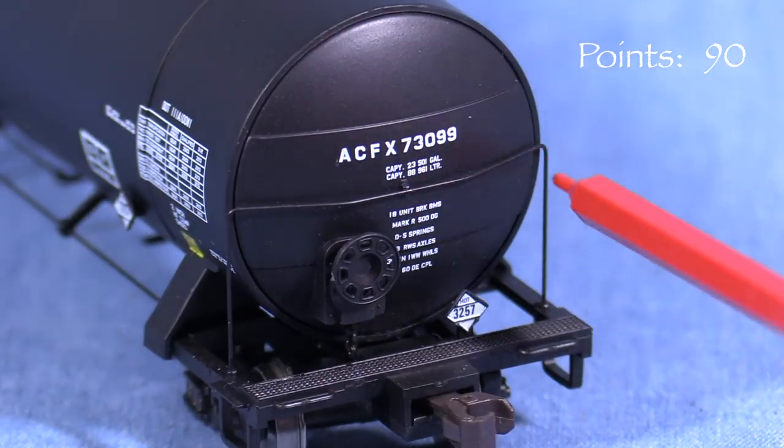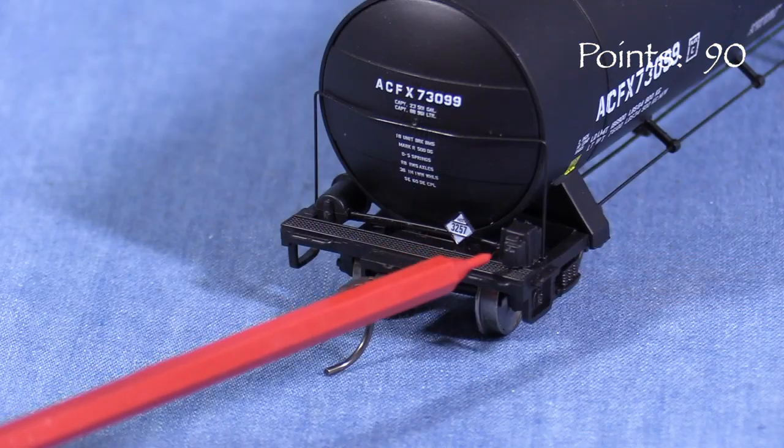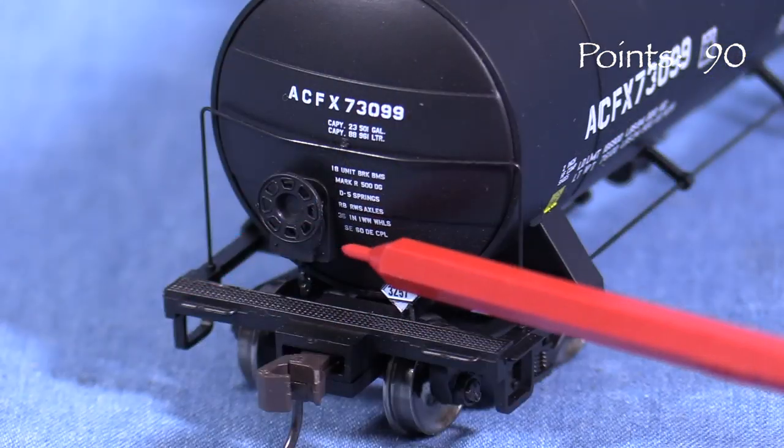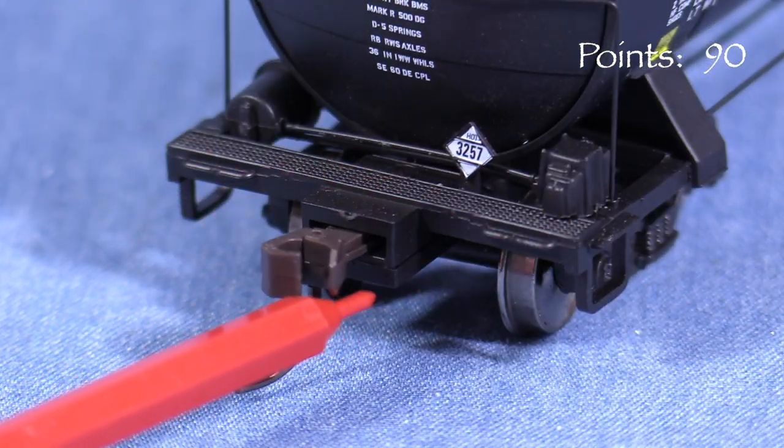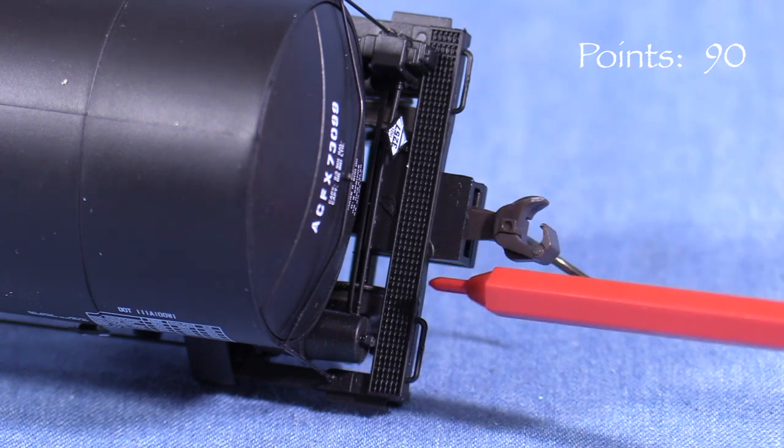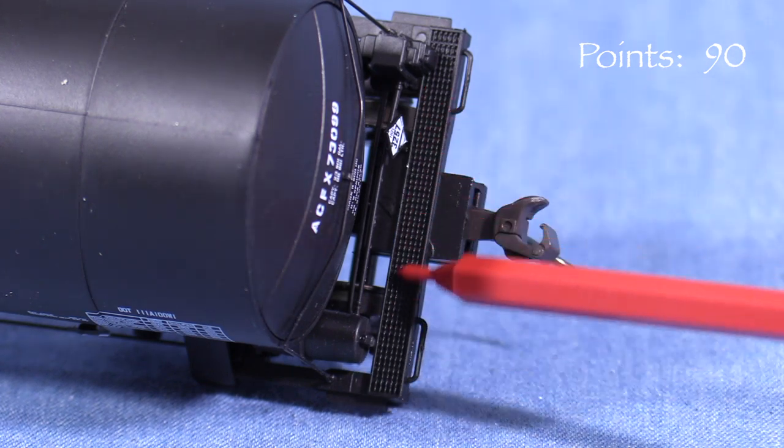Both ends of the car have freestanding end railings, hazmat placards, and end grabs. The A end has a brake reservoir and triple valve. The B end has a brake wheel. Neither end has uncoupling levers or brake lines. The end platforms are solid plastic and not see-through. There are other cars in this price range that have those details, so I'm taking 5 points.